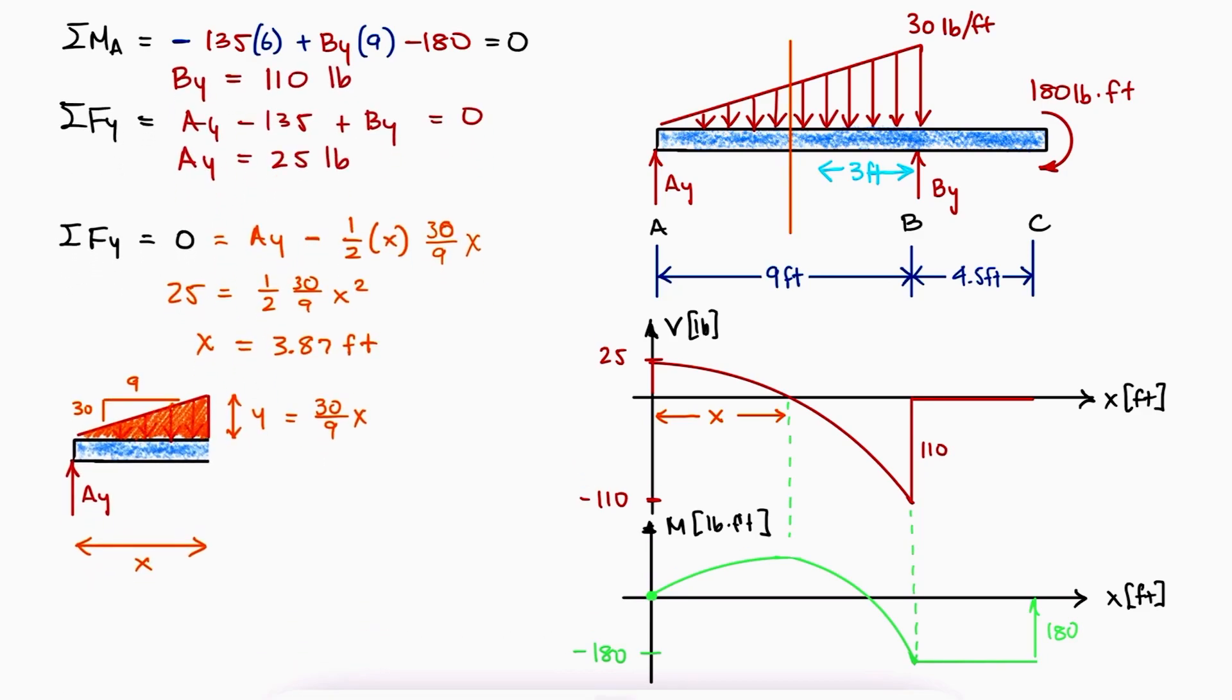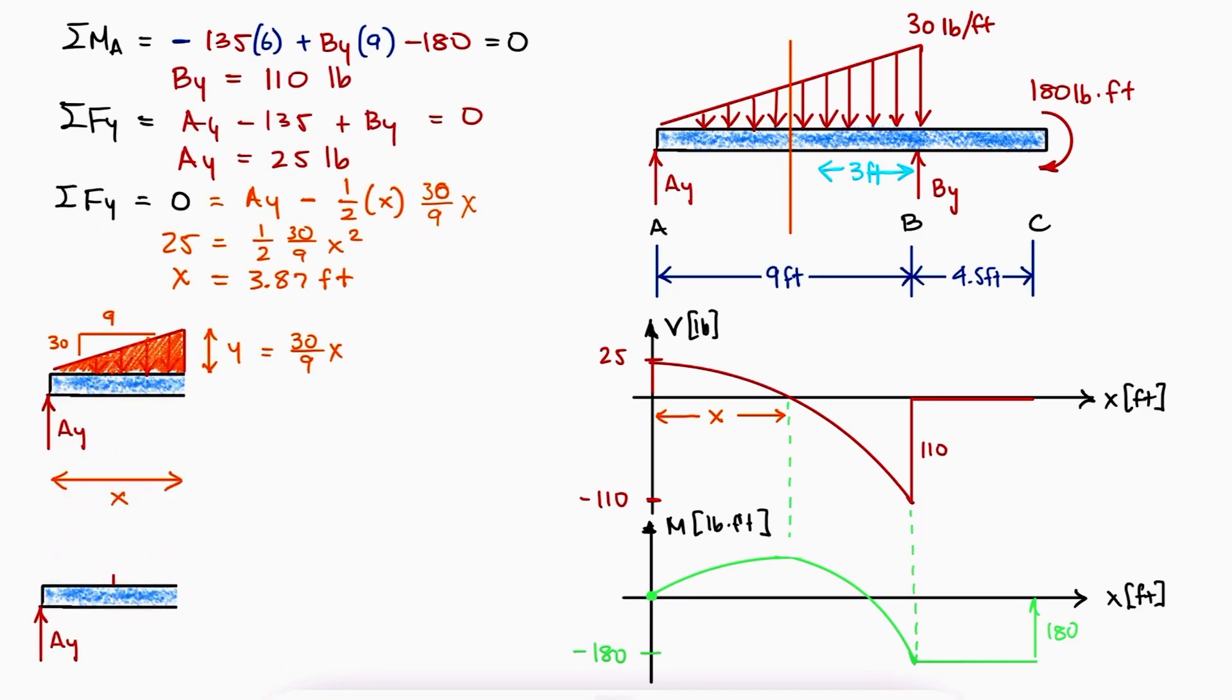The moment at that location can be found by using a sum of moments about that point. We can find the force by substituting X, which we already know should be 25 to counteract AY, and its location would be at the centroid of the triangle one third of the way from its base. The sum of moments would reveal that MX is equal to 64.5 pound feet.